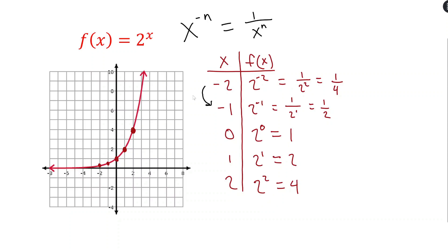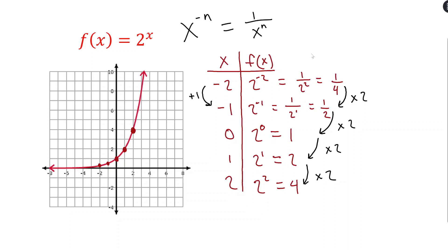Not only is it increasing, but the rate at which it's increasing is also increasing — we say this function is increasing exponentially. As x increases by 1, y is not increasing by a constant additive amount; instead it's multiplicative. Each time we're multiplying by 2: 1/4 times 2 is 1/2, 1/2 times 2 is 1, 1 times 2 is 2, 2 times 2 is 4. This is the biggest distinction between exponential and linear functions — repeated multiplication versus repeated addition.